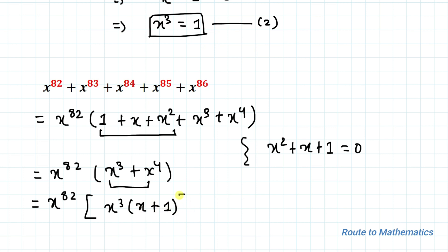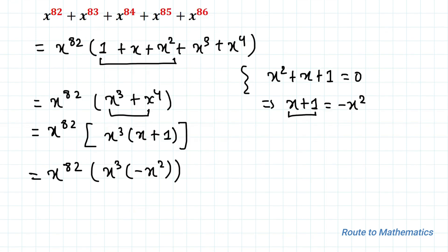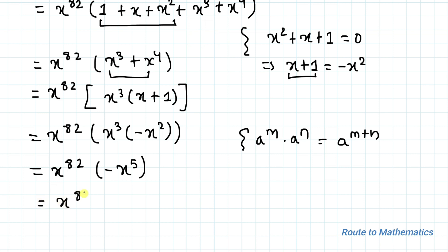From the remaining two terms I take x cubed as common, giving (x plus 1). From equation 1, x plus 1 equals minus x squared. Substituting this value, we get x to the power 82 multiplied by x cubed multiplied by minus x squared. Applying the exponential law — a to the power m times a to the power n equals a to the power (m plus n) — we can write this as x to the power 82 times x to the power 5 times minus 1, which gives minus x to the power 87.